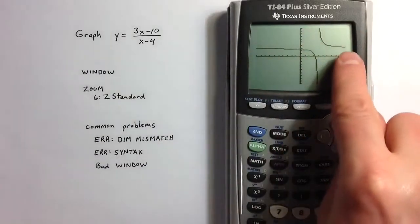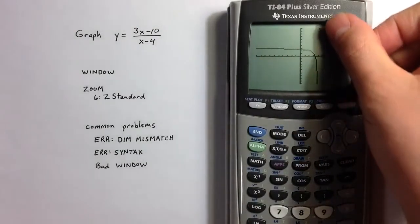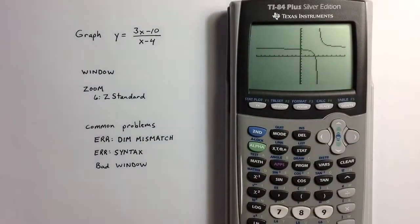So our particular function, it has a horizontal asymptote at 3 and a vertical asymptote at 4.